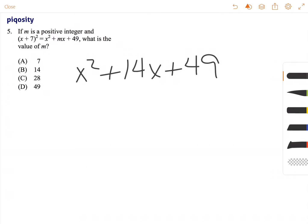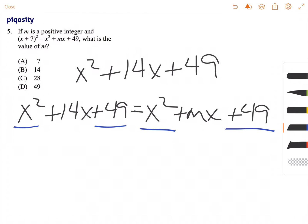Now we set this equal to the right hand side, so now we can start looking at it: x² + mx + 49. Now because this is a balanced equation, this x² is the same thing as this x². This +49 is the same thing as this +49.